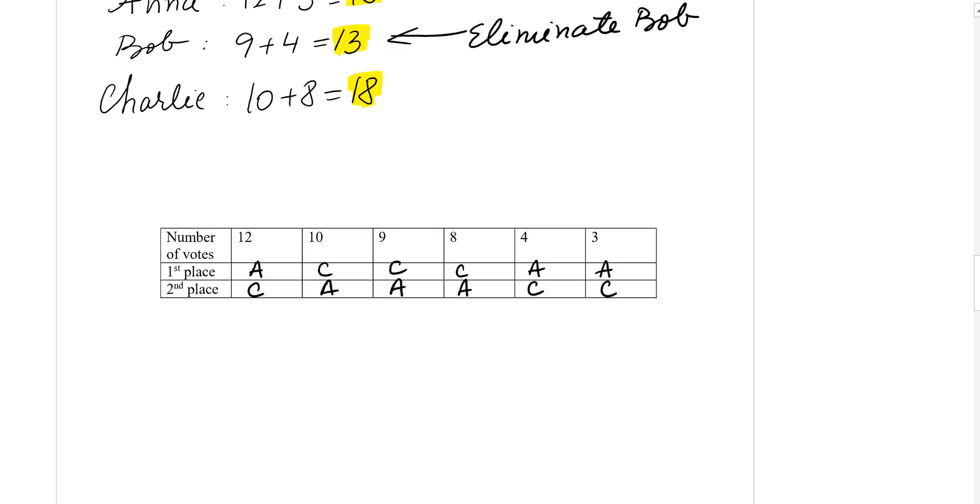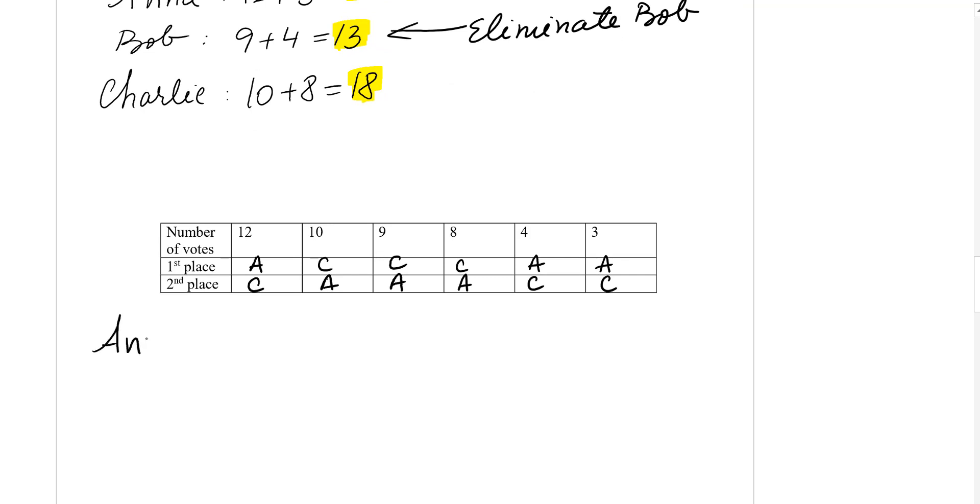So now let's do again. Anna has 12 plus 4 plus 3, so she has 19 votes. And Charlie, we just look at the first place, has 10 plus 9 plus 8, which is 27.